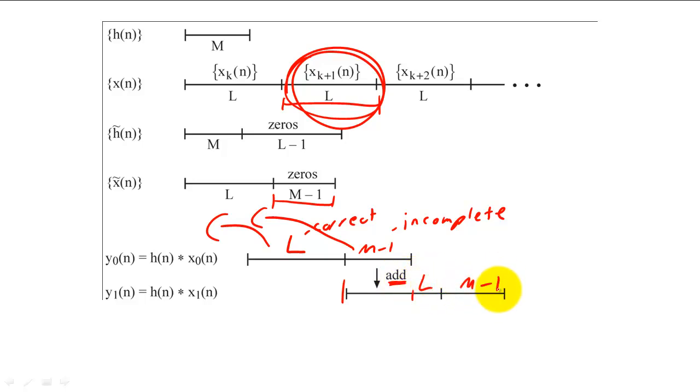By repeating this method of overlapping and adding smaller convolutions, we can compute the full convolution sum for the entire input sequence, one chunk at a time.